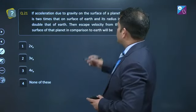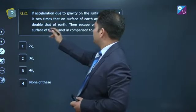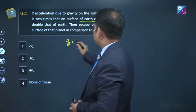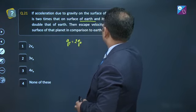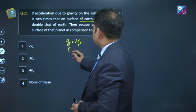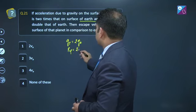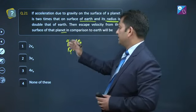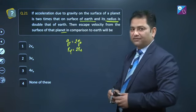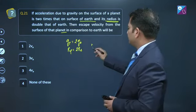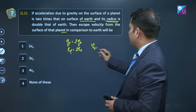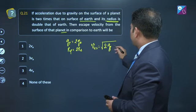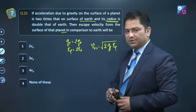Question number 21. Acceleration due to gravity on the surface is two times that on the surface of earth, so g of planet is twice g of earth. Radius of planet is twice radius of earth. We need to calculate escape velocity from the surface of earth. Well, escape velocity ka expression hai that is under root twice g, g of planet, radius of planet. Is planet ki escape speed nikalani hai.